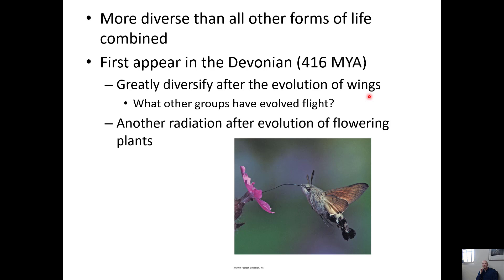A few groups have independently evolved flight: insects, mammals, birds, and separately the dinosaurs like pterodactyls. Insects had another adaptive radiation — a major increase in diversity — after the evolution of flowering plants in the Mesozoic Era. They co-evolved with plants and became pollinators, adapting to new food sources, and you really see an explosion of insect diversity in that time period.